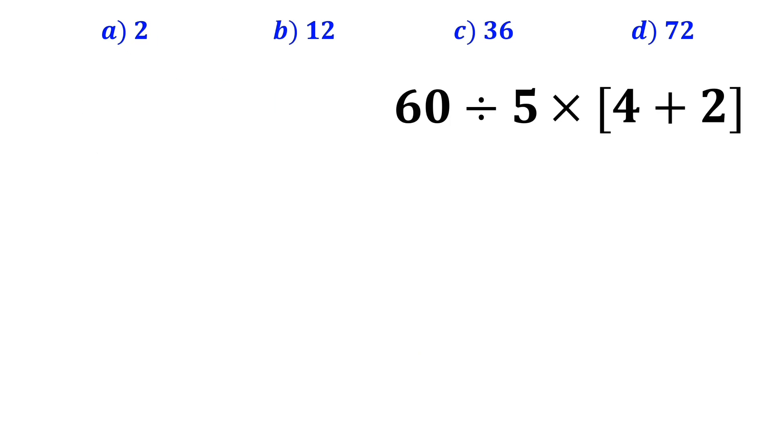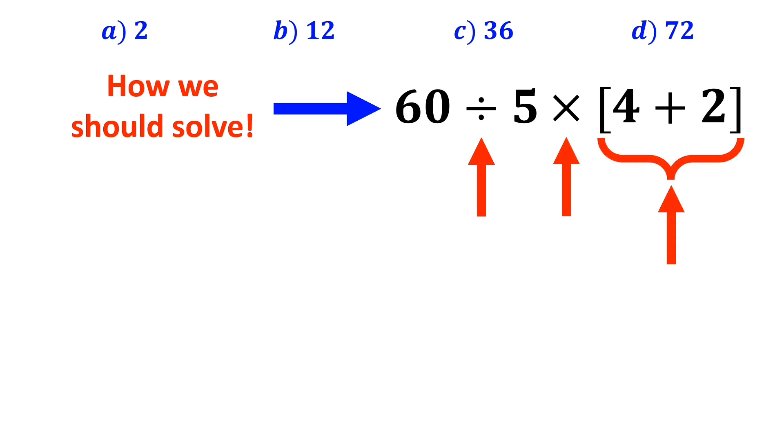Now, let me explain step by step how we should solve this question. As you can see on the screen, in this expression, we have a division sign, followed by a multiplication, and then a bracket. To solve this expression, we need to use the BODMAS rule.